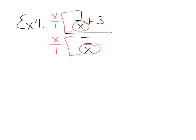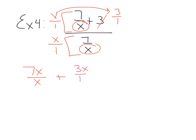In the numerator: 7X over X — those X's reduce to give 7. For the 3, it's 3 over 1, and multiplying gives 3X over 1, which is just 3X. So the numerator turns out to be 7 plus 3X.